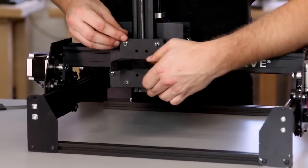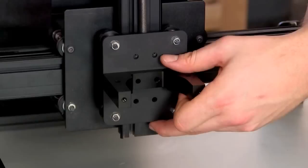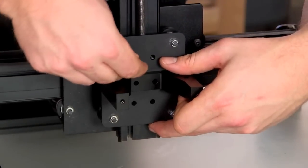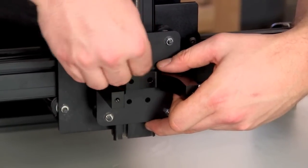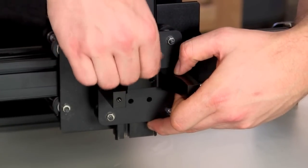Line the top holes of the plate with the Delrin nut, and secure with two screws. Again, get the screws finger-tight first, and then wrench them down.